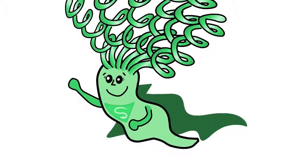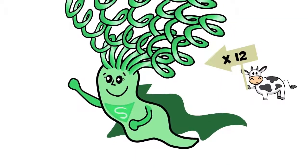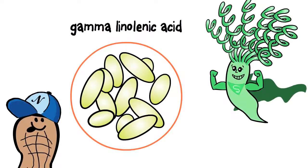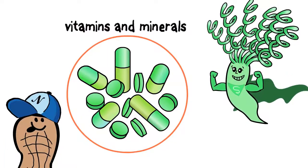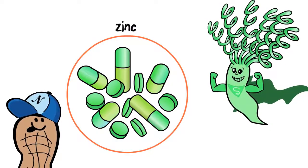A complete protein, spirulina contains more than 12 times the protein of an equivalent serving of beef. It also contains gamma-linolenic acid, vitamins and minerals such as iron, selenium, and zinc.